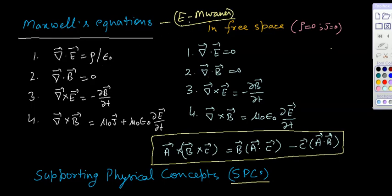In the last video I discussed about the application and the basic properties of electromagnetic waves and their frequency, wavelength, etc. Now, these are the basic Maxwell equations: divergence of E is equal to ρ upon ε₀, and divergence of B is equal to 0.